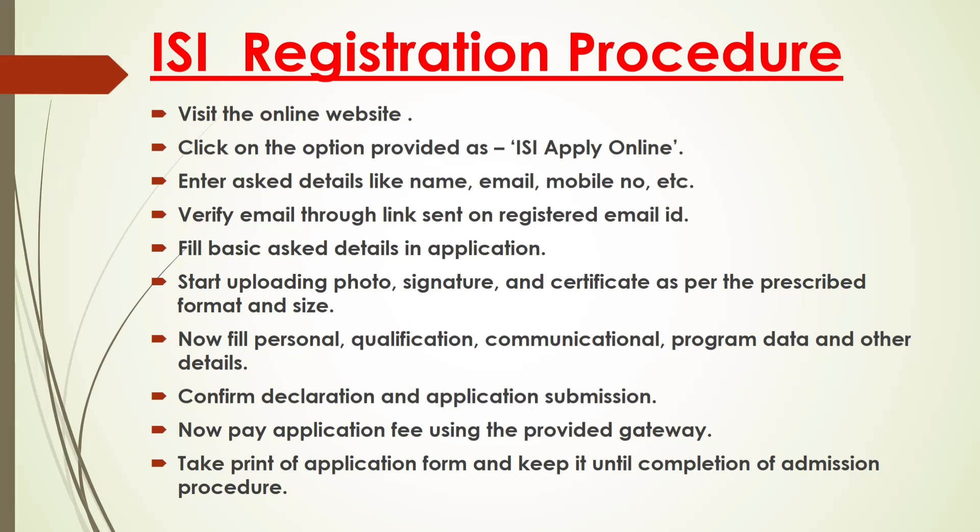ISI Registration Procedure: Visit the official website and click on the option 'ISI Apply Online.' Enter basic details like name, email, and mobile number. Verify your email through the link sent to the registered email ID. Fill in basic details in the application form. Upload your photo, signature, and certificates as per the prescribed format and size. Fill in personal, qualification, communication, program, and other details. Confirm the declaration and submit the application. Pay the application fees using the provided payment gateway. Take a printout of the application form and keep it until the completion of the admission procedure.